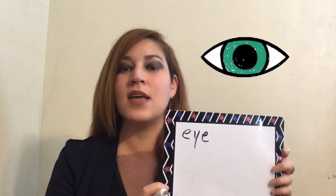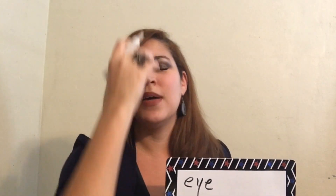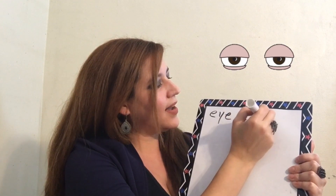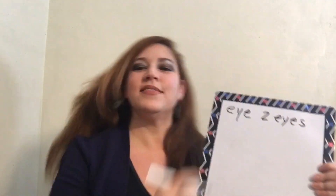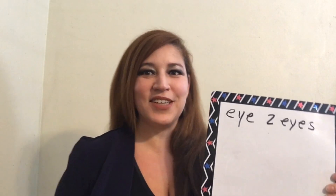Students, what is this part of the face? This is the eye. How do we spell that? Any ideas? So we have E-Y-E. That's one eye, but how many do we have? We have two. So we have one eye, two eyes.